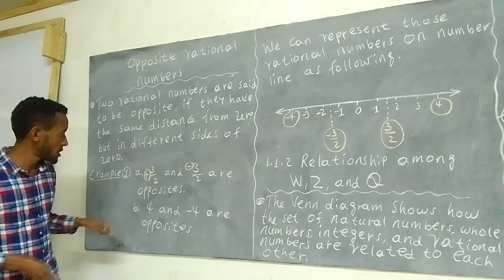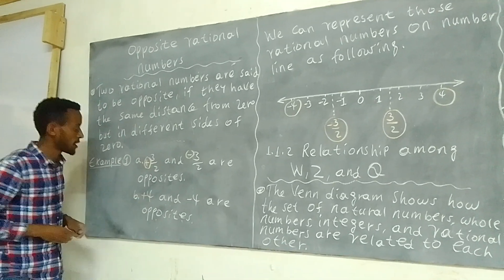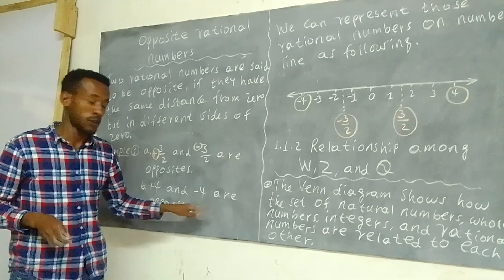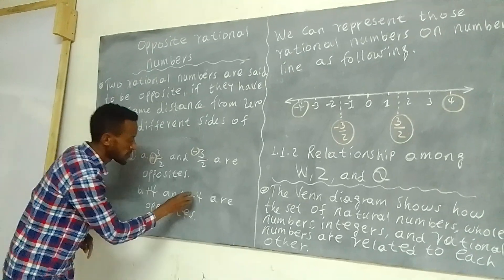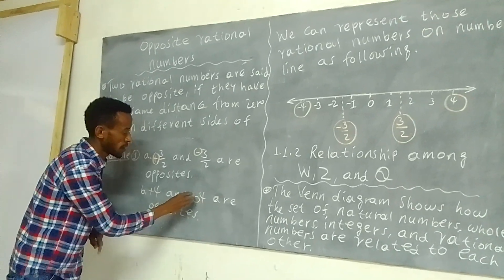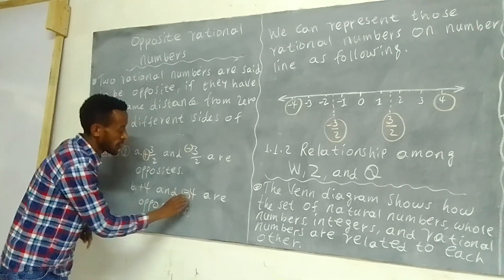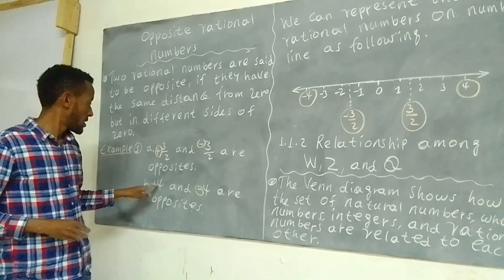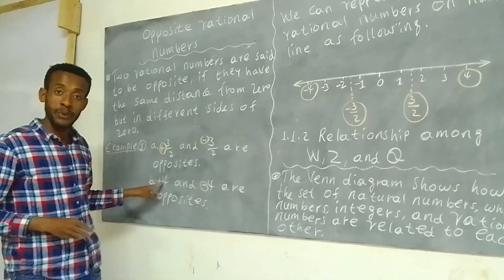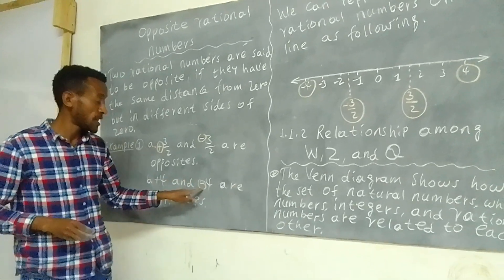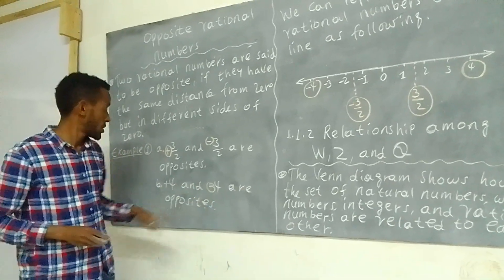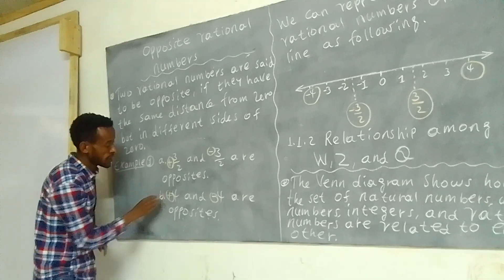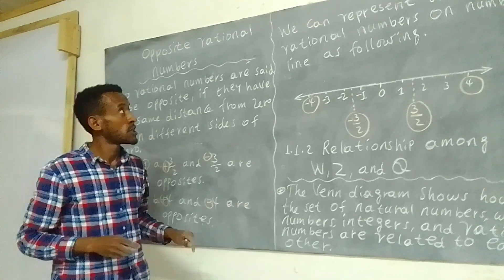Positive 4 and negative 4 are opposites. This one is positive, this one is negative. So both are opposites of each other.